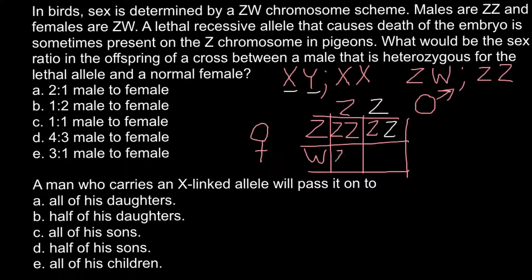Here we would have Z and W, and this is also going to be a female. However, this female would have only one Z chromosome with one defective allele, and this allele wouldn't be balanced with another normal allele as in males. So we are going to lose this genotype. Half of the females would have the defective allele and such an embryo wouldn't be able to develop. So the sex ratio would be two males to one female.